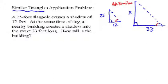So, can we write a proportion? Yes, we can. Lots of different ones are possible, but let's compare the height to the shadow of the flagpole: 25 over 12 and X over 33. When we cross-multiply, what do we get?